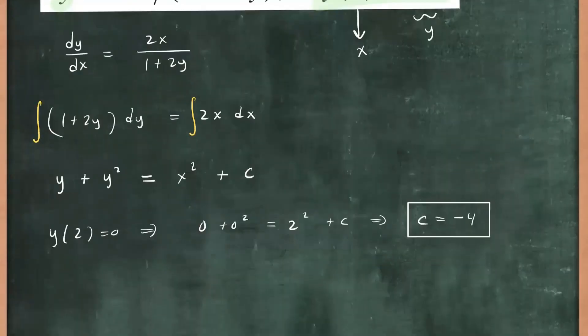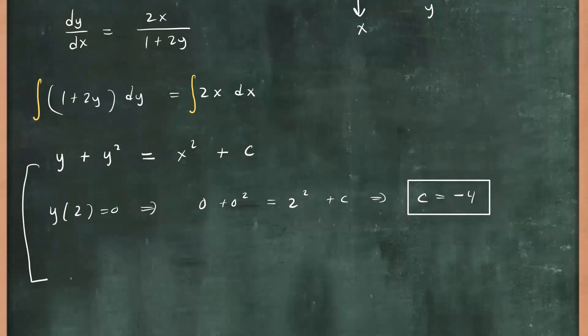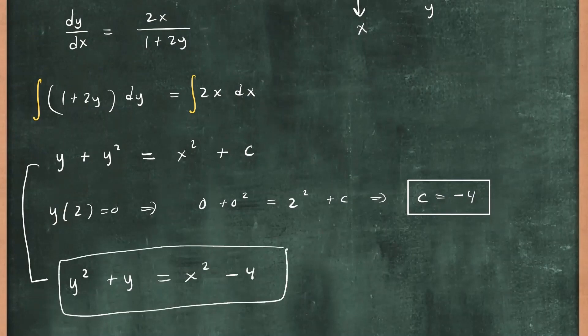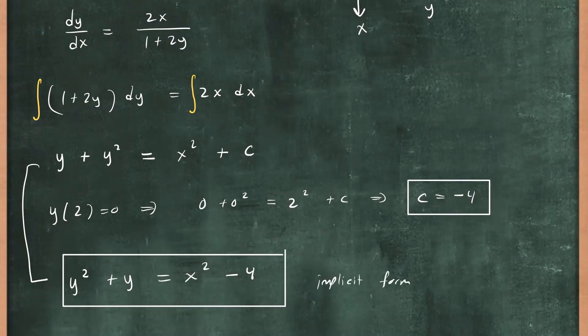Now let's go ahead and write our solution. So here's our solution. This is going to be: I'm going to rearrange y² + y = x² - 4. So this is an implicit solution. This is called the implicit form of the solution.